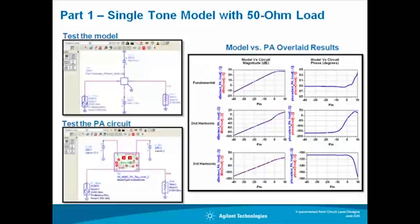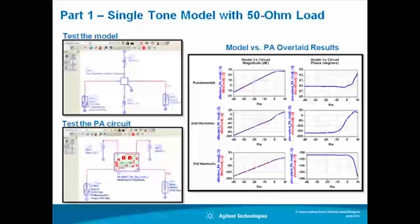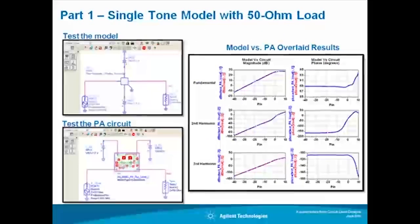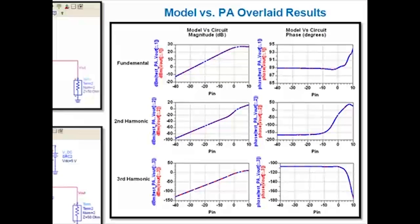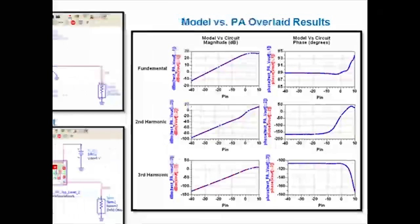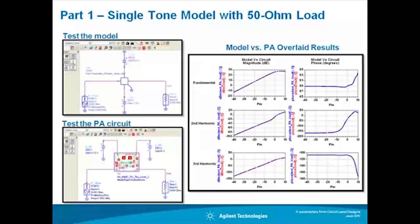In video one I explained what X parameters are and demonstrated using ADS how easy and fast it is to generate an X parameter model from an LTE circuit level power amplifier. I showed how the X parameter model is as accurate as the circuit level design in all dimensions linear and nonlinear and ideal to use in a system that contains cascaded 50 ohm matched modules.